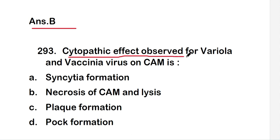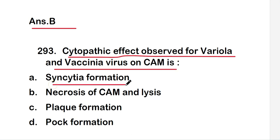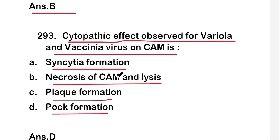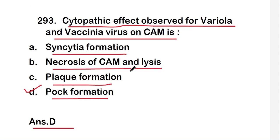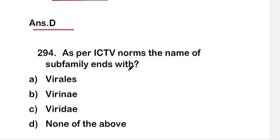Next question: the cytopathic effect observed for variola and vaccinia virus on CAM (chorioallantoic membrane) is syncytia formation, necrosis of CAM and lysis, plaque formation, or pox formation? The right answer is option D, pox formation. The cytopathic effect observed for variola and vaccinia virus on CAM is pox formation.